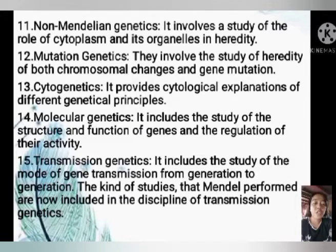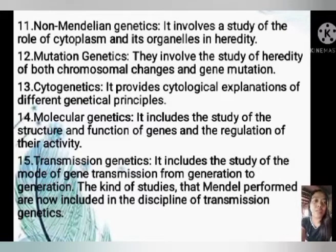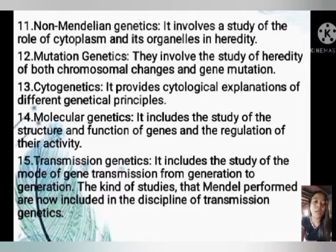Number 15, transmission genetics — it includes the study of the mode of gene transmission from generation to generation. The kinds of studies that Mendel performed are now included in the disciplines of transmission genetics. Transmission genetics is the mechanism that drives evolution. DNA includes all the information necessary to make an organism; every organism's DNA is made of the same basic parts arranged in different orders, and DNA is divided into chromosomes or groups of genes which code for proteins. Types of transmission genetics include autosomal dominant, autosomal recessive, X-linked dominant, X-linked recessive, and mitochondrial.